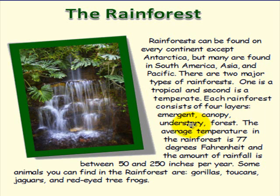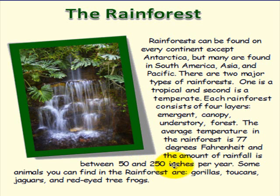Each rainforest consists of 4 layers: Emergent, Canopy, Understory, and Forest Floor. The average temperature in the rainforest is 77 degrees Fahrenheit and the amount of rainfall is between 50 and 250 inches per year.